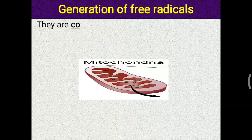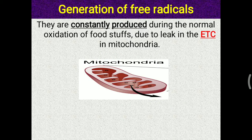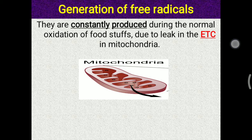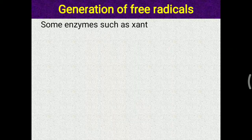Regarding how free radicals are generated: first, mitochondria — they are constantly produced during normal oxidation of foodstuff due to leakage in the electron transport chain. Inside the mitochondria, during the ETC, electrons are transported from Complex I through Complex II to Complexes III and IV. If an electron leaks and combines with oxygen, a free radical is generated. About 1 to 4 percent of oxygen taken up in the body is converted into free radicals.